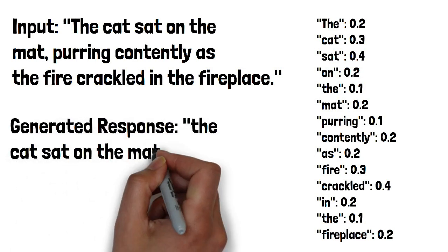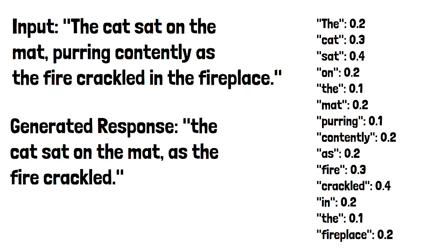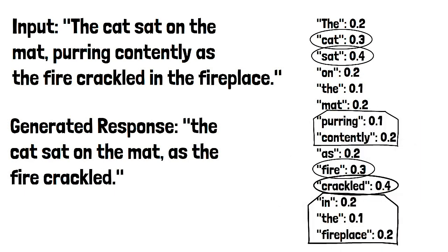For example, for the input sentence 'the cat sat on the mat, purring contentedly as the fire crackled in the fireplace,' an attention model that assigns weights based on immediate context might primarily attend to 'cat,' 'sat,' 'fire,' and 'crackled,' as these words have higher attention weights. However, the model might not effectively capture the relationship between 'purring contentedly' and 'in the fireplace' due to their relative distance and lower weights. As a result, the generated response fails to include important details about the cat's purring and the crackling fire, which are crucial to conveying the full meaning and context of the original sentence.